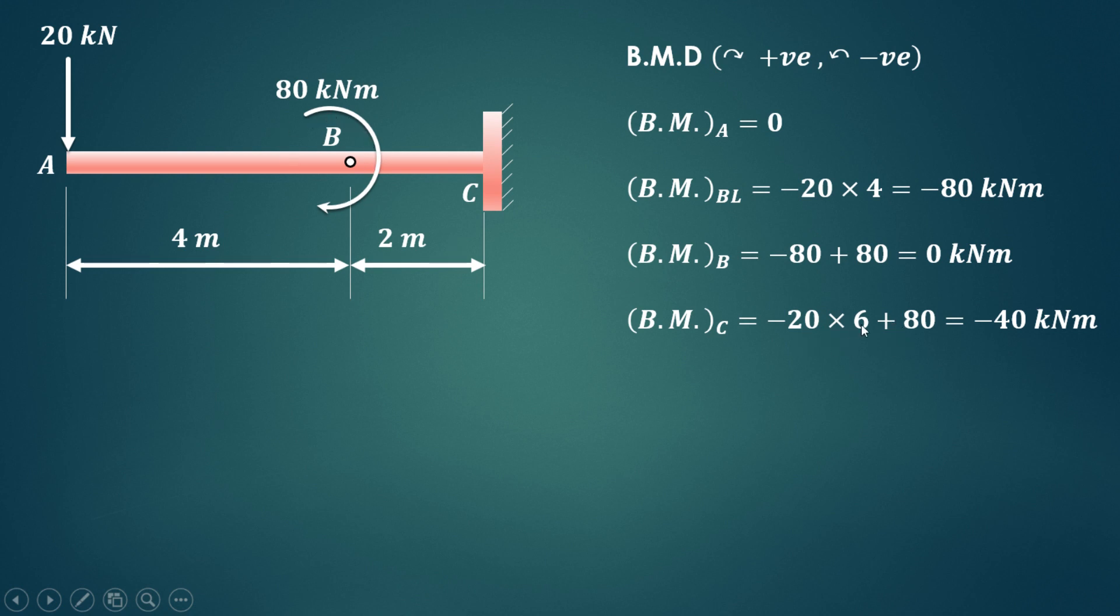Now we'll draw the bending moment diagram. So bending moment at A is 0, at B left it is minus 80, then at B it is 0, and at C it is minus 40 kNm.